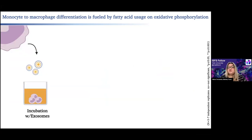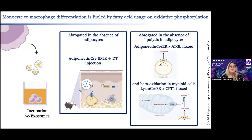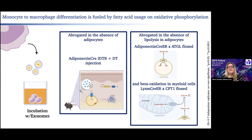We also used transgenic models to address this process. In the absence of adipocytes, monocyte-to-macrophage differentiation doesn't happen, as shown before. More interestingly, when adipocytes lack ATGL — the rate-limiting enzyme for lipolysis — monocyte-to-macrophage differentiation still doesn't happen. And even more interestingly, when monocytes lack the capacity to internalize lipids into their mitochondria, these cells also don't differentiate, showing this is a tightly regulated process of lipid transfer that is used in the mitochondria of monocytes.